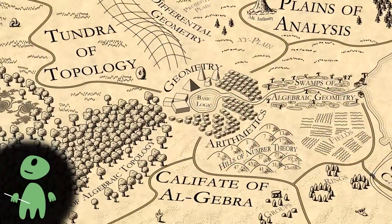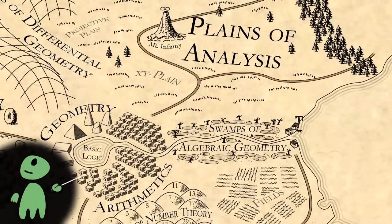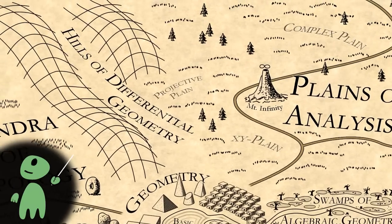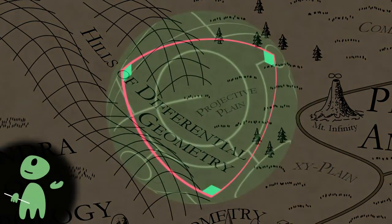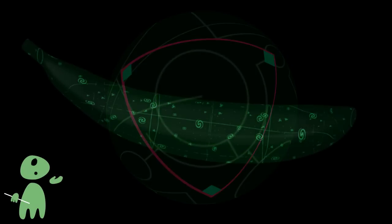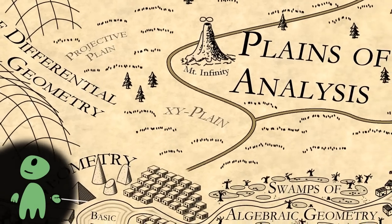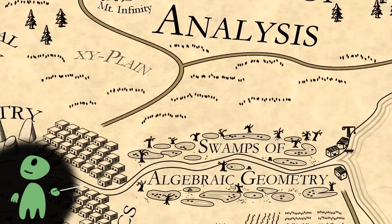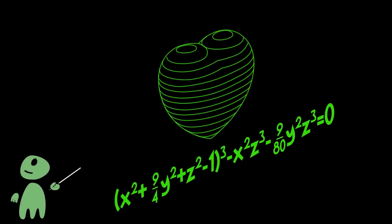Back to our mathematical landscape. Like between algebra and topology, there are interdisciplinary fields between analysis and the other fields. When you combine analysis with topology, you get differential geometry, the theory of shapes with notions of length and angles. It's very useful, for example for speculating about the shape of the universe. On the border between analysis and algebra we have algebraic geometry, the theory of shapes defined by polynomials. One example would be this heart-shaped surface, which is defined by this equation.